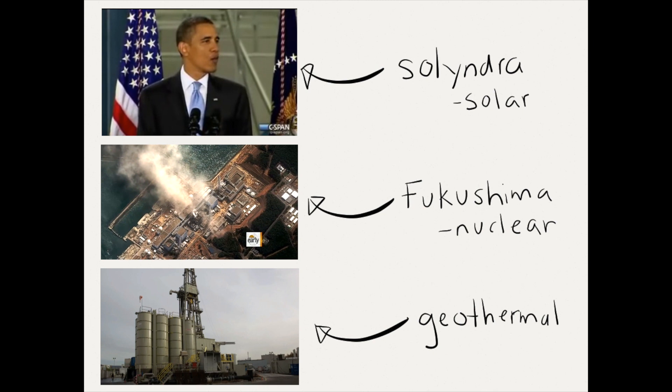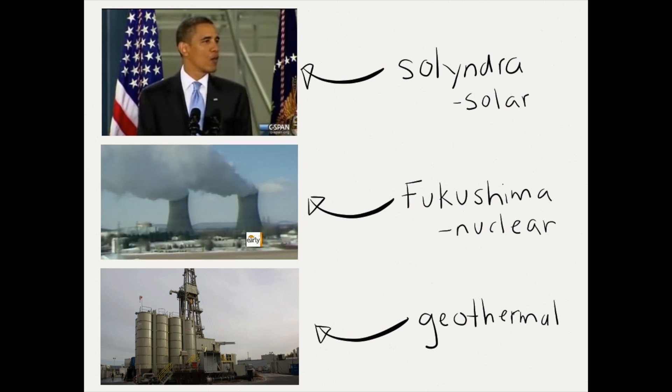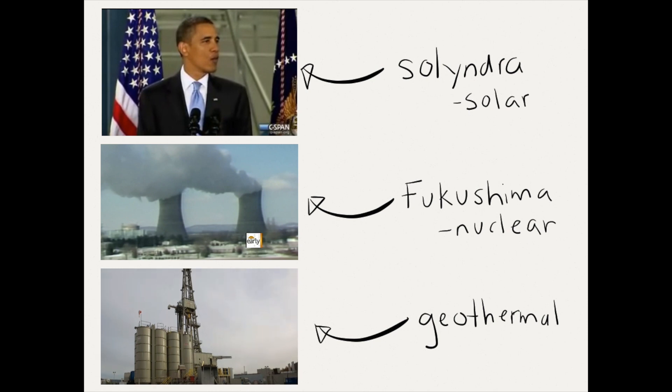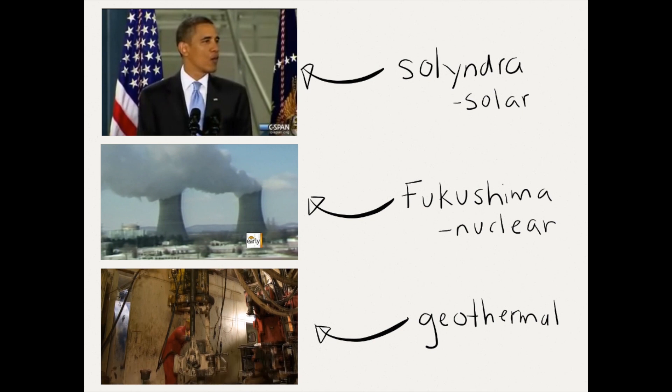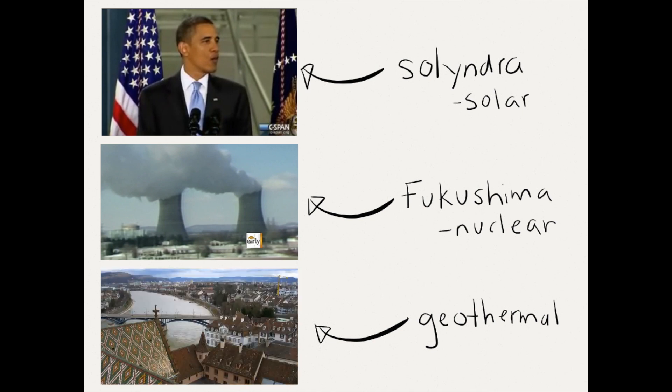Japan's nuclear crisis now appears to be worse than 1979's Three Mile Island accident. In 2006, an enhanced geothermal project was shut down after it triggered a 3.2 earthquake in downtown Basel, Switzerland.